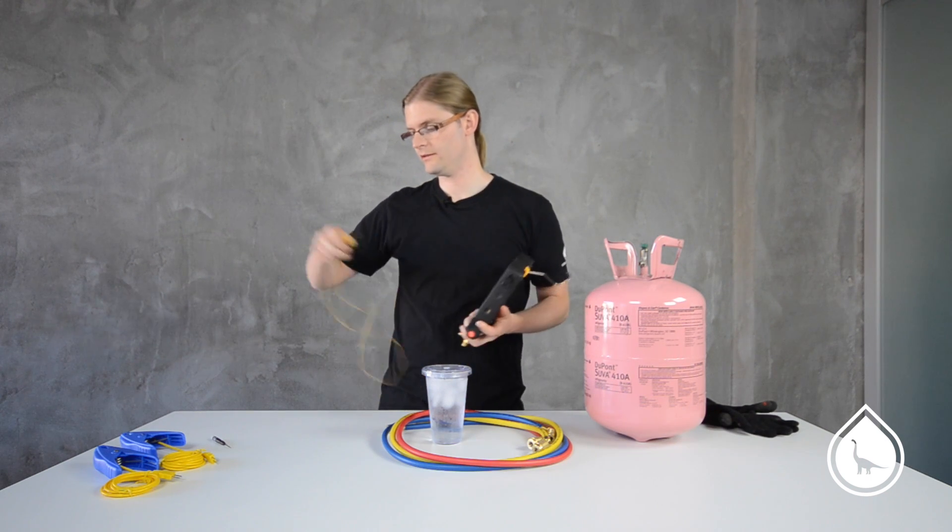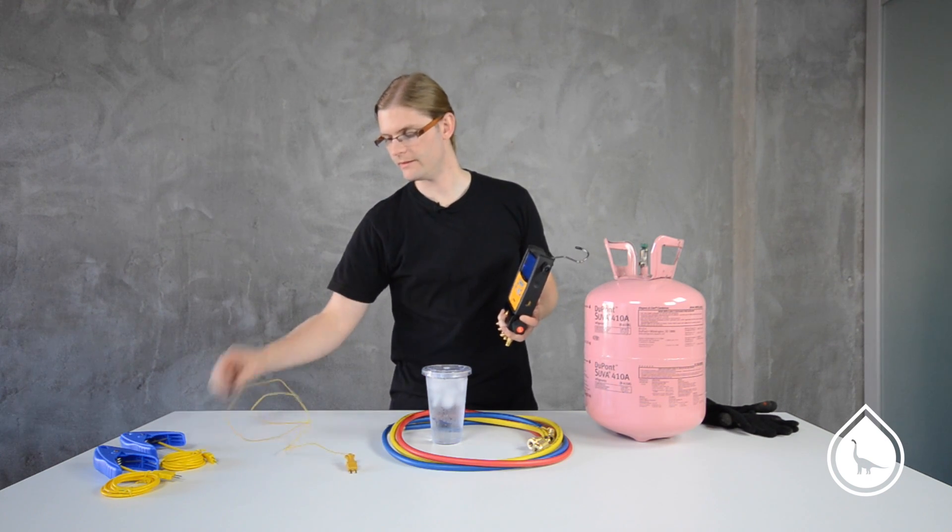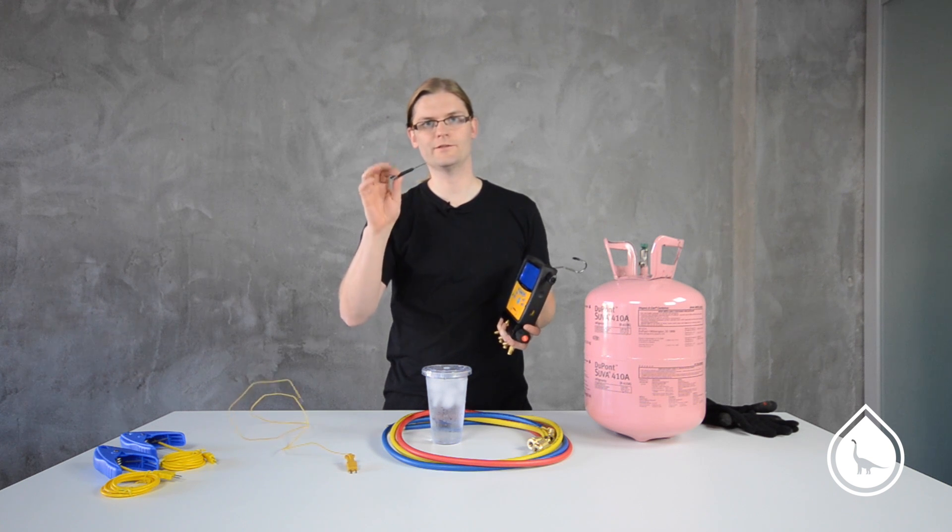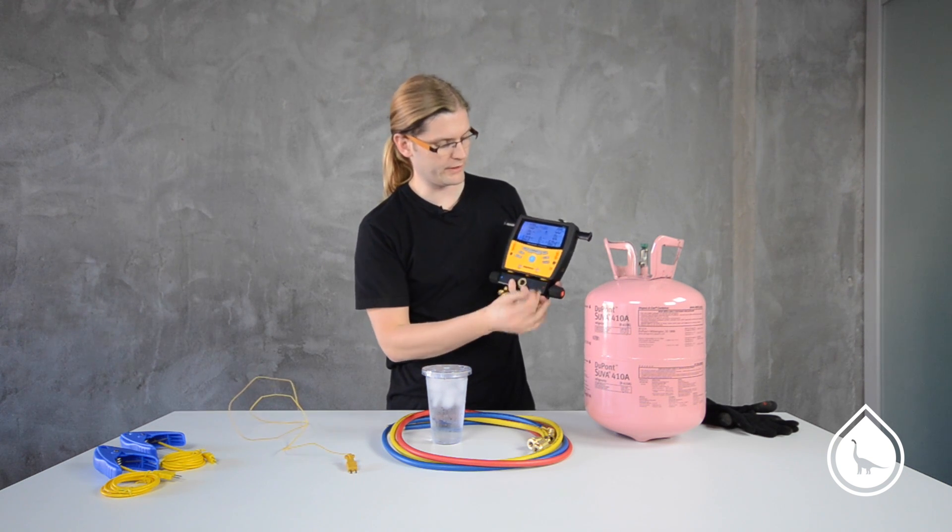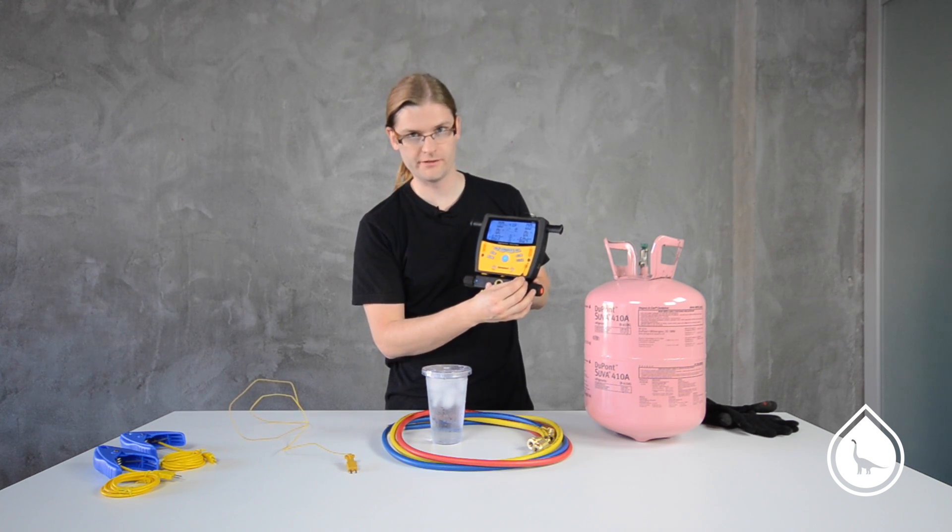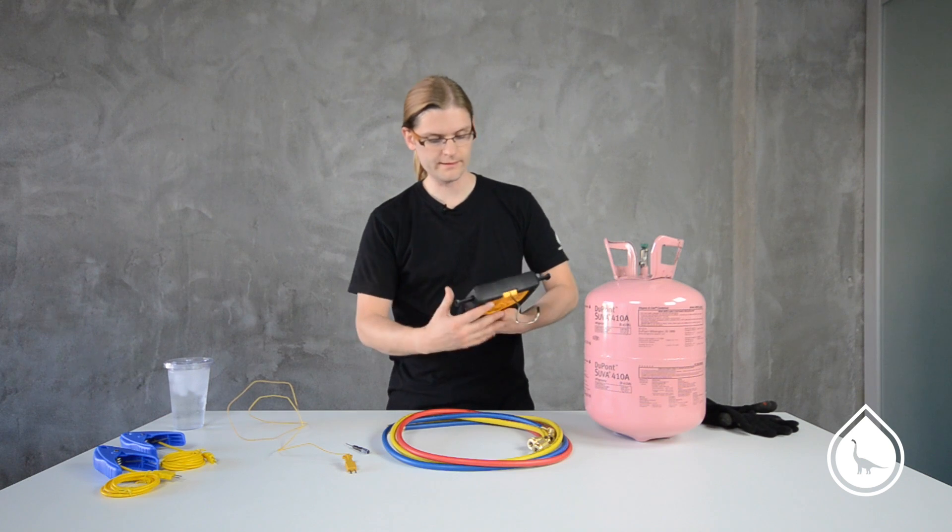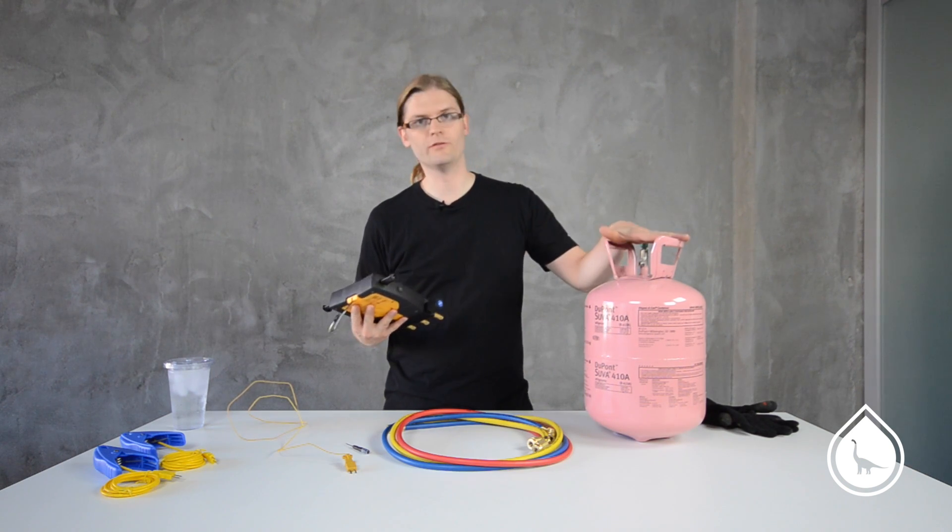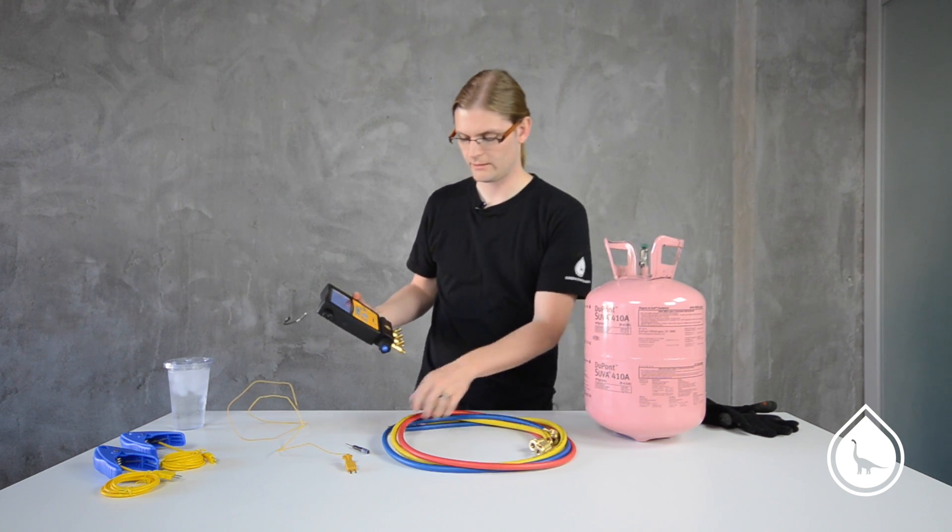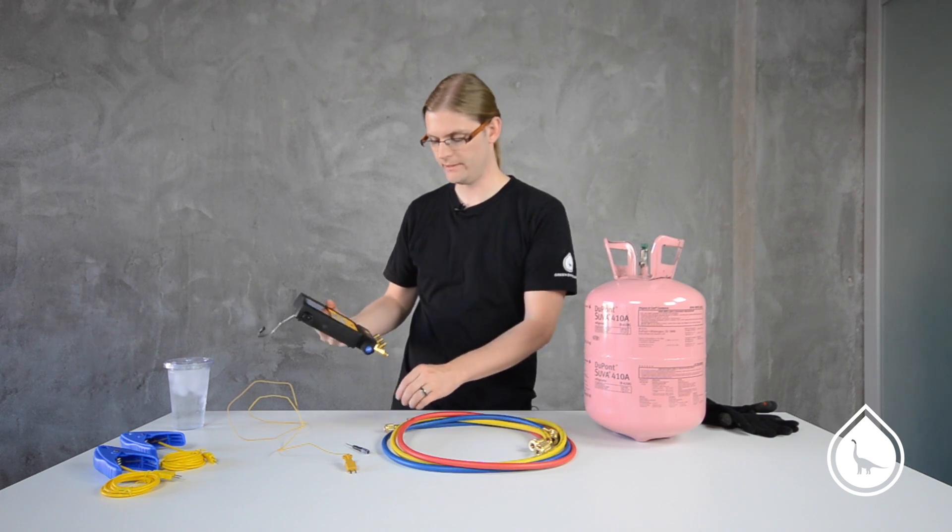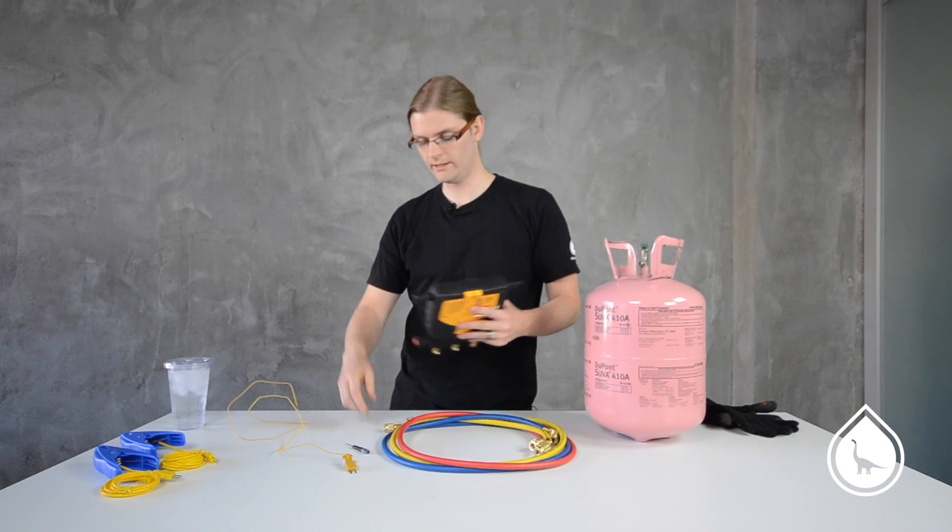If those are reading off and they need to be adjusted, you'd grab your flathead screwdriver, put it in the calibration potentiometer here, and give it a little twist either clockwise or counterclockwise until your temperature reads right around 32. So the next step is going to be to connect to our refrigerant and compare our readings to an actual PT chart.